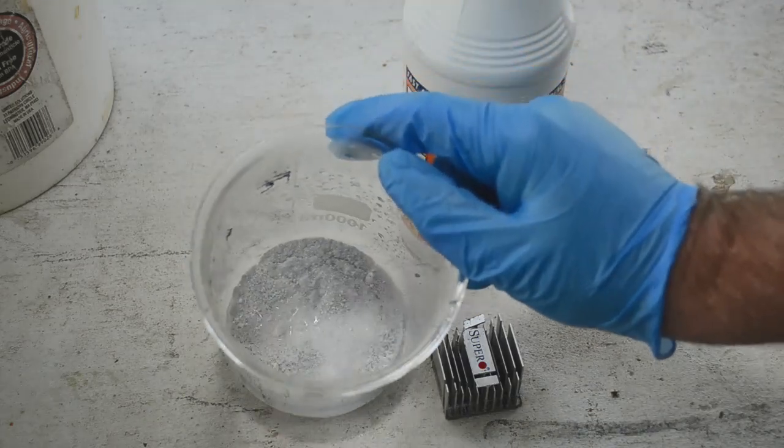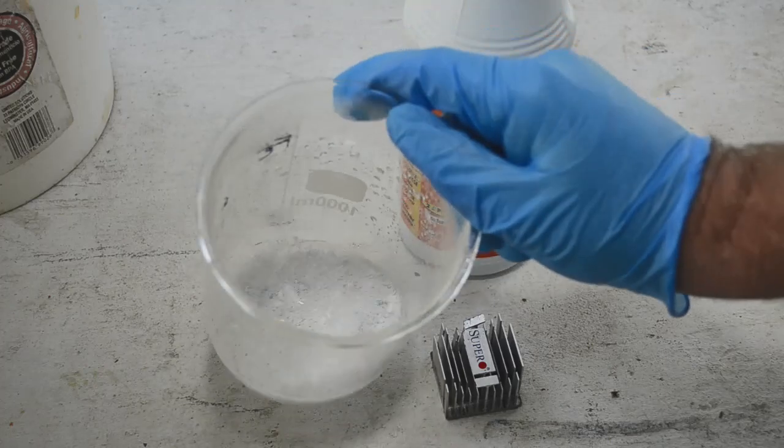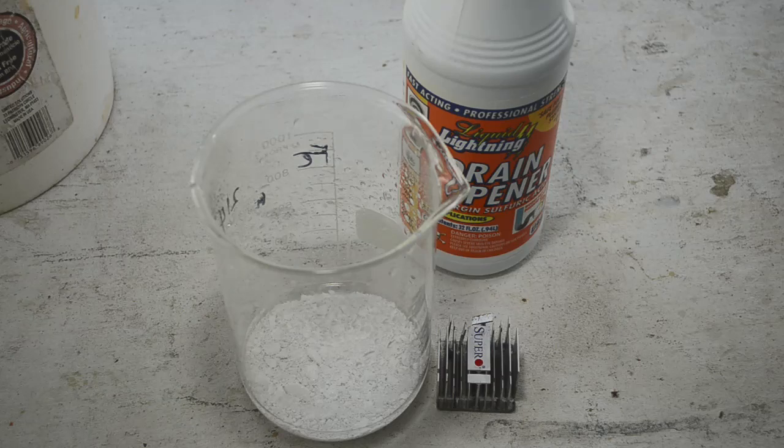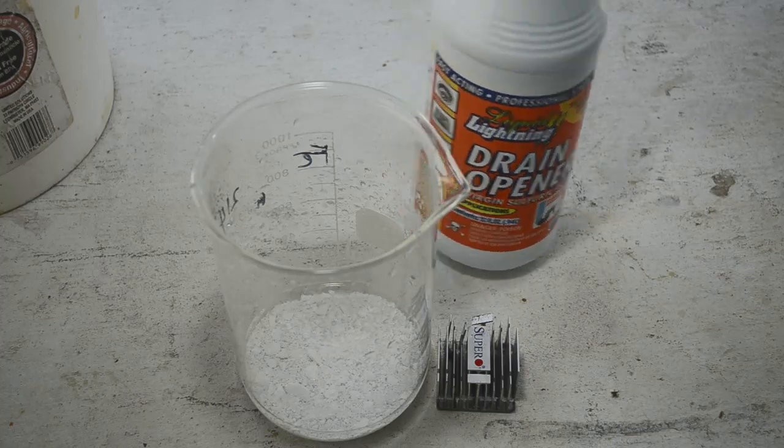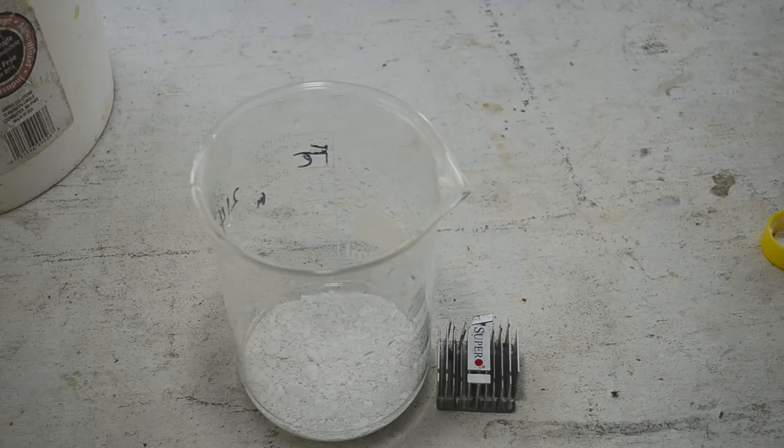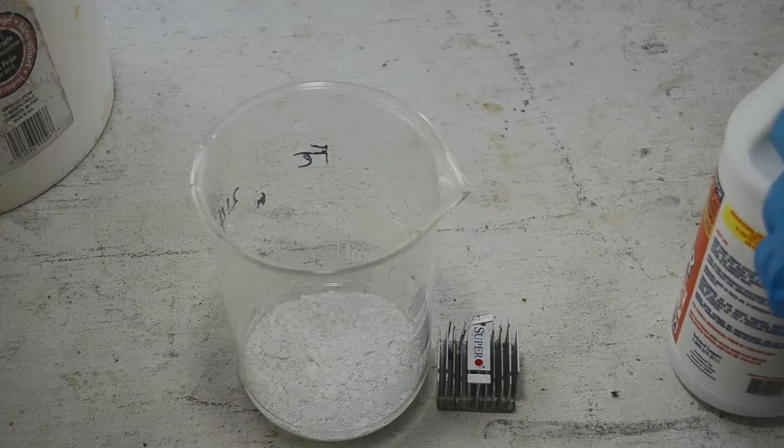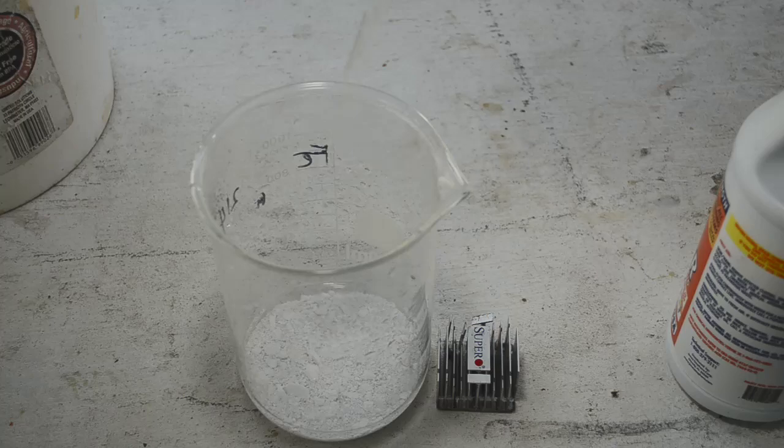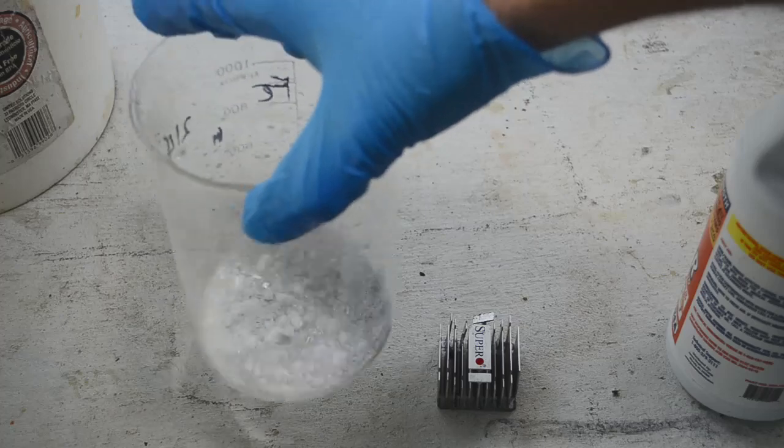So I've got some more silver chloride down here in this beaker, covered with just a little bit of water, maybe a millimeter or so over the top. That's all that's in there, nothing else. Now I'm going to add a few drops of sulfuric acid drain cleaner to this, not a lot. Just a little bit. One, two, three, four, five, six, seven, eight drops. That's all.